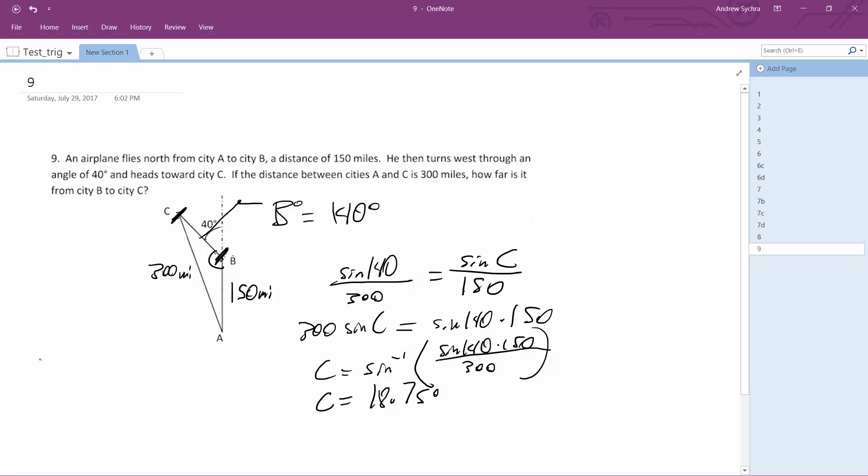So in this case, 180 minus 140 minus 18.75 gives us 21.25 roughly.